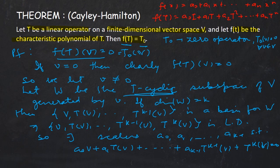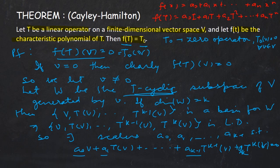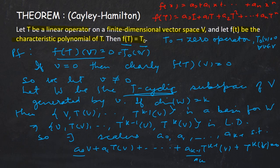The reason we haven't written a coefficient on T^k v is that the coefficient should be non-zero, and we can divide all terms by it to normalize it to 1. So we can assume the coefficient of T^k v is 1, giving us that equation equal to 0.